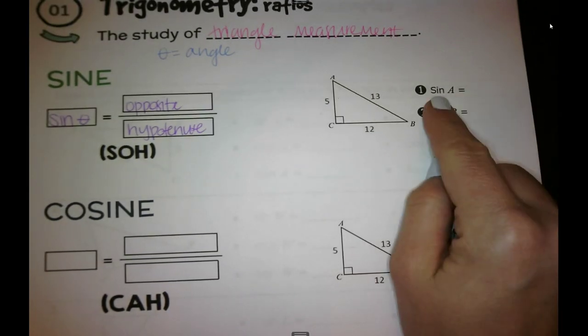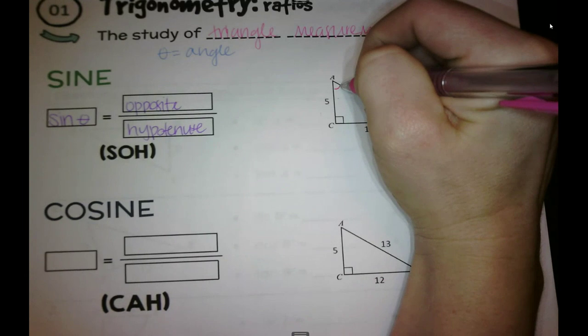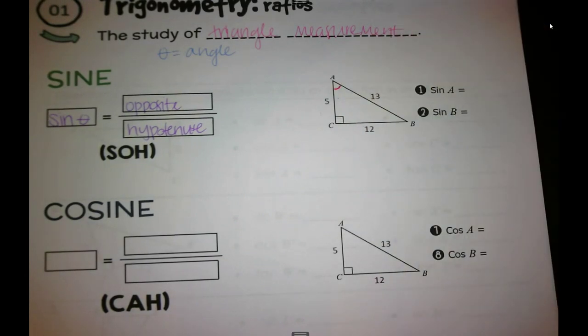Okay, so sine of A, so A is our angle, so this one right here. So opposite over hypotenuse.